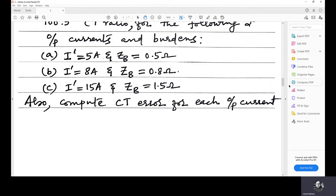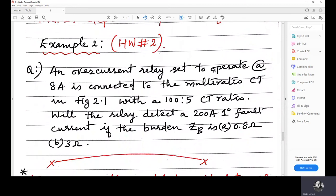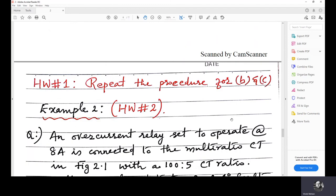So, the second question is also a homework. The second question is an overcurrent relay set to operate at 8 amps is connected to the multi-ratio CT in figure 2.1, the same excitation curve taken from the Westinghouse relay manual. With a 100 is to 5 CT ratio with the same current ratio, will the relay detect a 200 amps primary fault current if the burden ZB is 0.8 ohms in the first case and in the second case 3 ohms. So, please do this, these two questions as homework. Homework one is part B and C and homework two is example two.